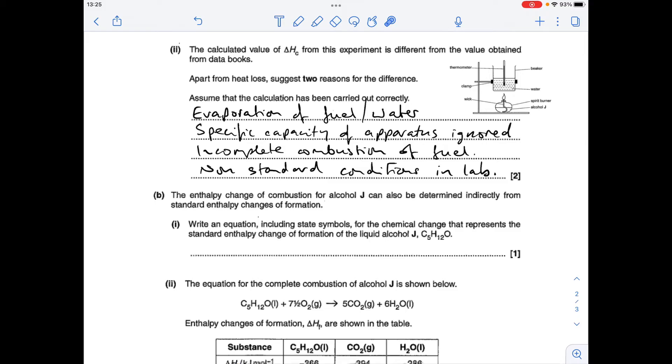Part B now. So the equation that represents the standard enthalpy change of formation of liquid alcohol J. So we've got to form one mole of the alcohol from its constituent elements. So it's going to be five moles of carbon solid, six moles of hydrogen gas, and half a mole of oxygen gas. And just make sure that your state symbols are nice and clear. So if the examiner can't work out whether you're saying solid or gas - they often look very similar - obviously if the examiner's in any doubt, it won't give you that mark.